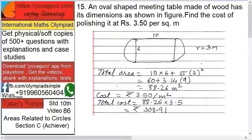Pi r squared: pi into 3 squared. Diameter is 6, so radius is 3. So 60 plus 3.14 into 9. Add them - first multiply this and then add them - it becomes 88.26.